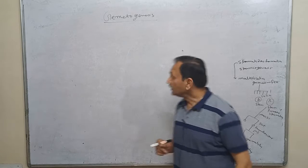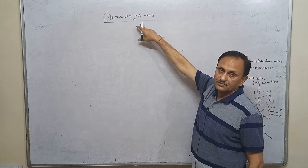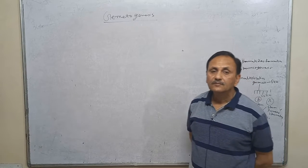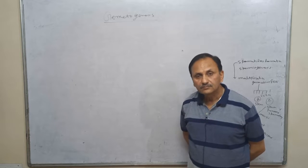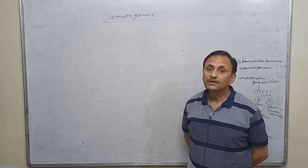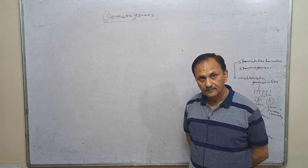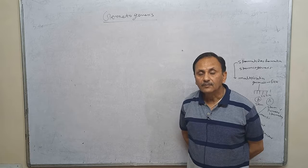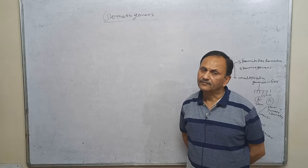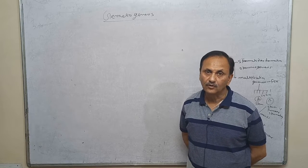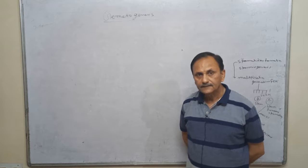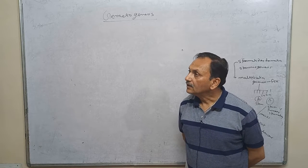Good morning students. Today's topic is gametogenesis in human beings. Gametogenesis means formation of gametes — formation from germinal epithelium which is diploid in condition, converting into haploid gametes by the process of meiosis. This gametogenesis has a special role of FSH, that is follicle stimulating hormone, and the gamete leaves the primary sex organ after puberty.